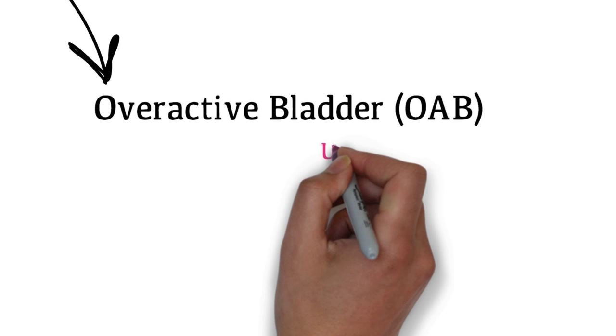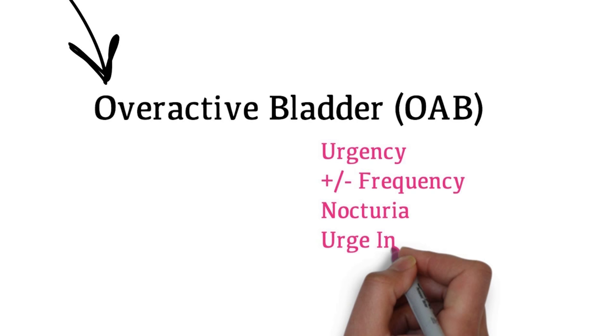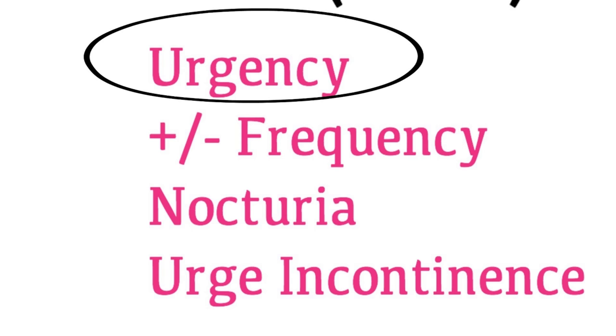They may also have symptoms of overactive bladder. Overactive bladder consists of urgency, with or without frequency, nocturia and urge incontinence. The main symptom of overactive bladder is urgency.